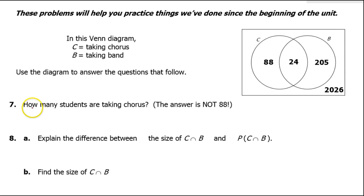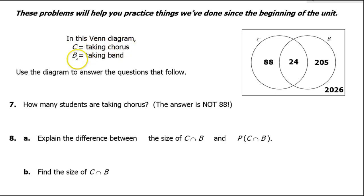So let's see, what is this problem about? Set C represents people that are taking chorus. Event B represents taking band. So we have chorus people and band people.